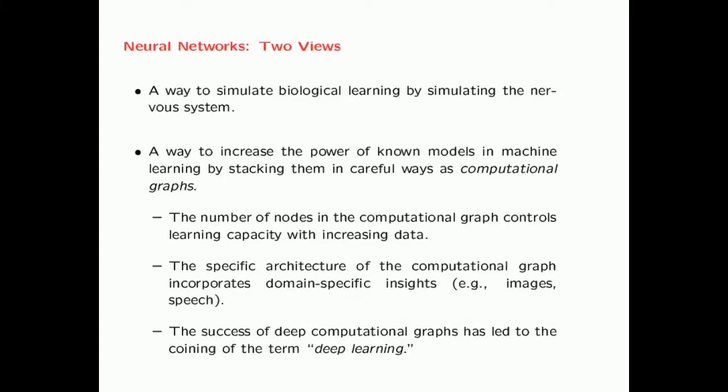There are two predominant views of neural networks. The way neural networks started was as a way to simulate biological learning by simulating the nervous system in biological organisms. However, the modern view of neural networks is that it is viewed as a way to increase the power of known models in machine learning by stacking them in careful ways as computational graphs. The number of nodes in the computational graph controls the learning capacity with increasing data.